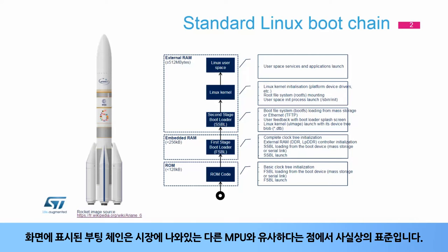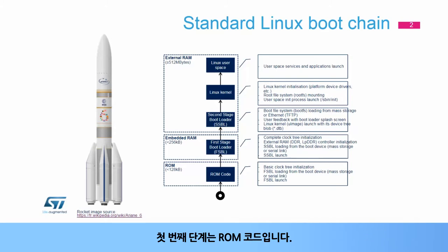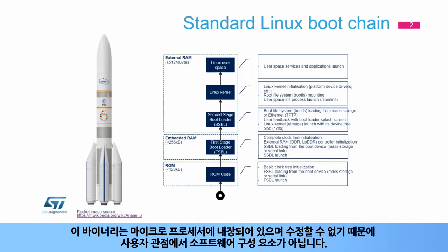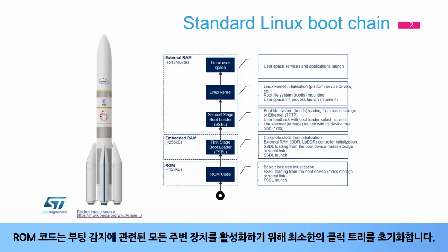The boot chain shown on the screen is really standard in the sense that steps are similar on other MPUs available on the market. The first stage is the ROM code. This is not a software component from a user perspective, since this binary is embedded in the microprocessor and cannot be modified. The ROM code initializes a minimal clock tree in order to get all the peripherals involved in the boot detection alive.